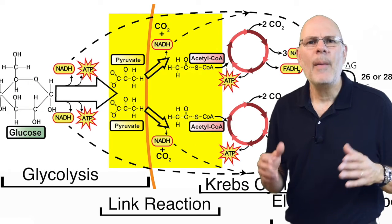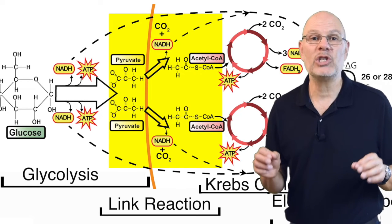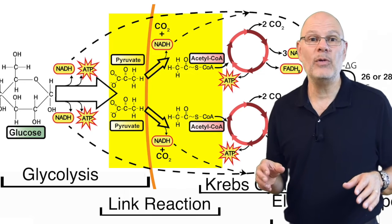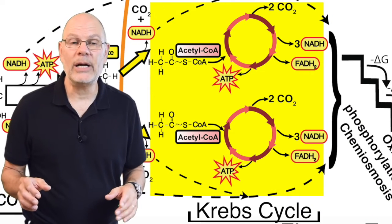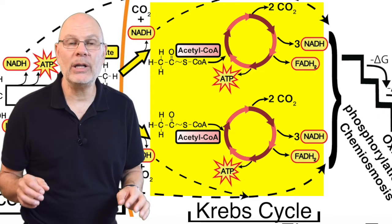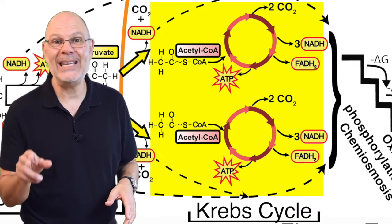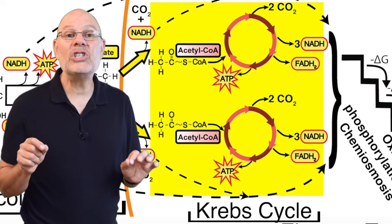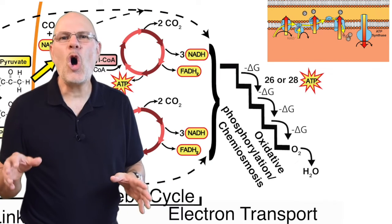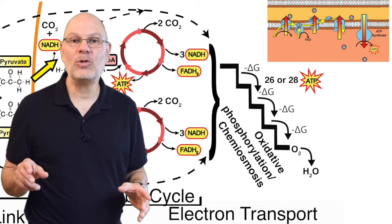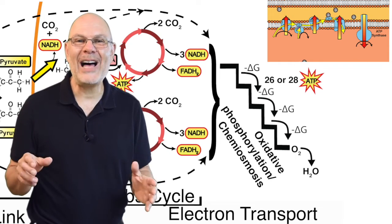The second step is the link reaction. Pyruvate is brought into the mitochondria. Enzymes oxidize the pyruvate and remove a carbon dioxide, creating a two-carbon molecule called acetyl-CoA. The oxidation of pyruvate is accompanied by the reduction of NAD+ to NADH. In the third step, acetyl-CoA enters the Krebs cycle. The enzymes in the Krebs cycle use acetyl-CoA's chemical energy to power a substrate level phosphorylation of ADP to ATP and a reduction of NAD+ and FAD to NADH and FADH2. For each acetyl-CoA that enters the cycle, two carbon dioxides are released as waste products. Finally, in the fourth step, all of these reduced NADHs and FADH2s power the electron transport chain, which powers the proton pumping that sets up ATP synthase to convert ADP and phosphate into ATP.